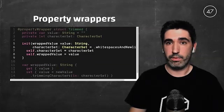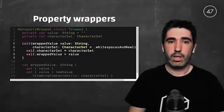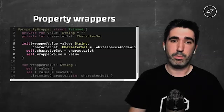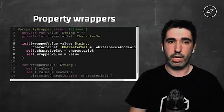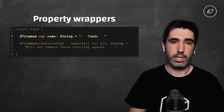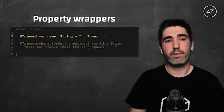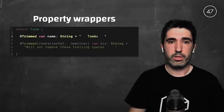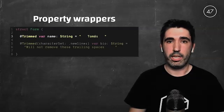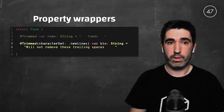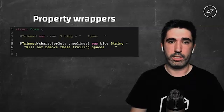Property wrappers can receive additional parameters during initialization, but the only restriction is that the wrapped value must be the first argument passed to the init. If we want to use them, we add the `@Trim` property wrapper before the field declaration and it will use the value assigned on the right as the initial wrapped value. If we want to override the default character set, we just pass it as a regular argument.